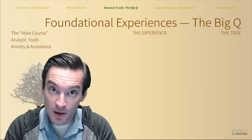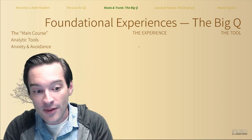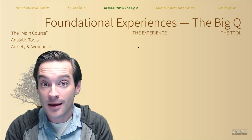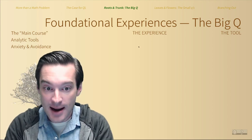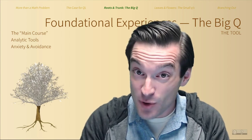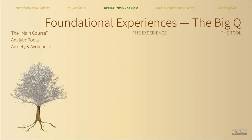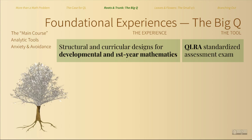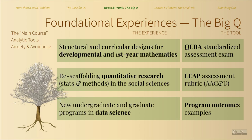In a big Q setting, we find focused experiences designed to establish a foundation of transferable quantitative skills. In these settings, numbers are the main course. The expectation that students reason quantitatively is pervasive and consistent. We can assess student skills analytically based on that expectation. It's also here where we find the highest degrees of student anxiety and avoidance, and higher rates of DF and W grades that impair student success and drive attrition. So we have to get this part right. We see in big Q examples of institutions revising their approaches to both developmental and first-year mathematics, rethinking curriculum and delivery of research methods and statistics courses in the social sciences, and developing entire undergraduate and graduate programs around data science.